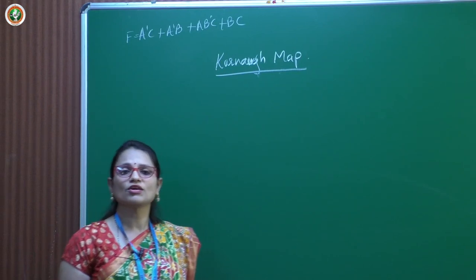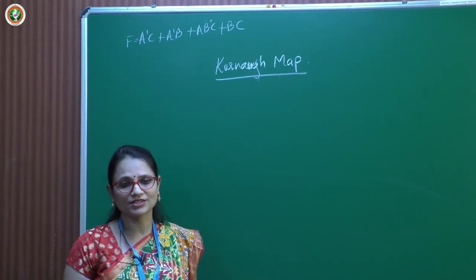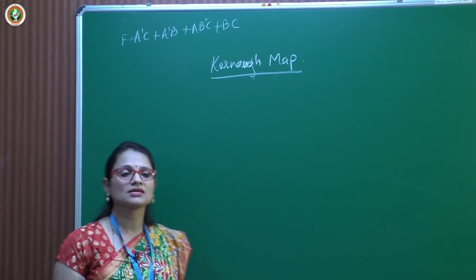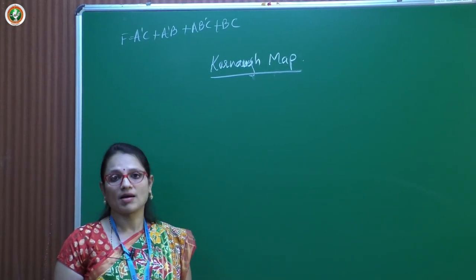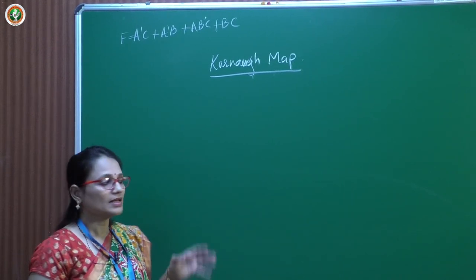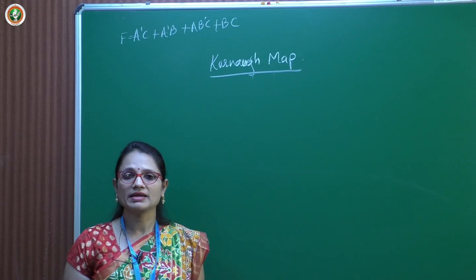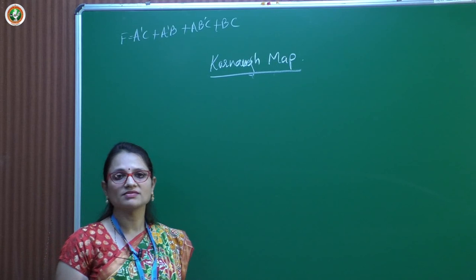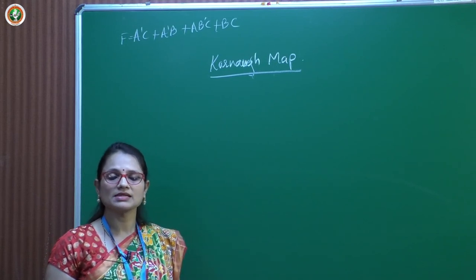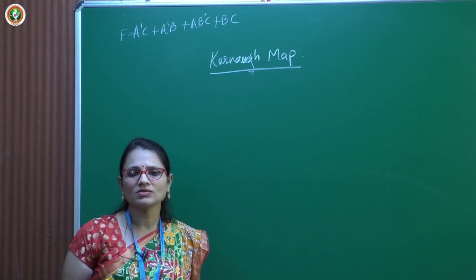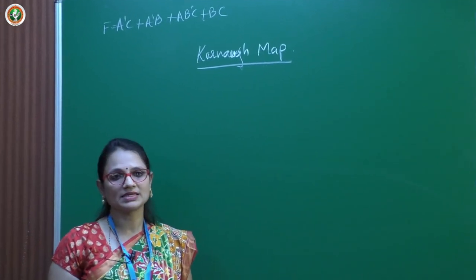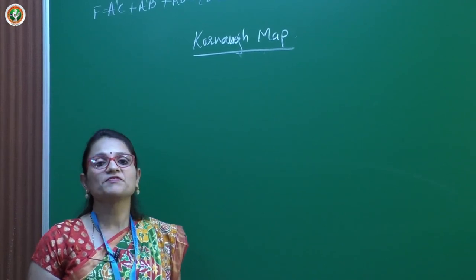Let us start with the class. Let us look at another method of Boolean expression simplification — using K-map, also called the Karnaugh map. Let us start with the 2-variable K-map. When we have 2 variables, we can represent them using a truth table. The K-map is nothing but another version of representing the same truth table in a different method.